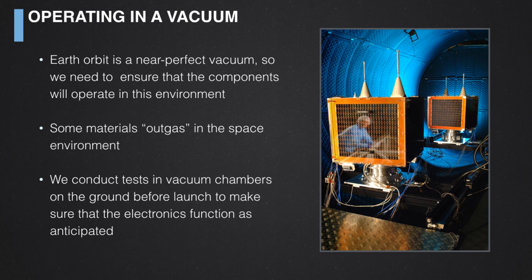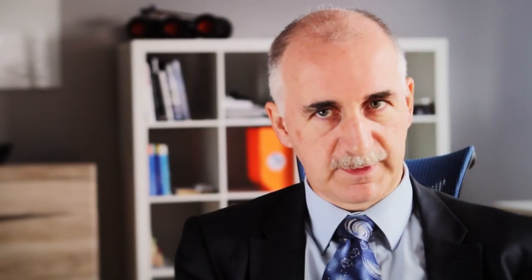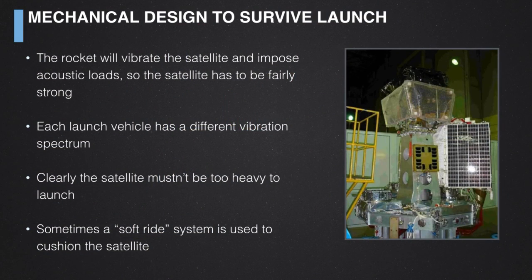The satellite will arrive in space and you need to be sure it will operate successfully in a vacuum. We take a lot of components from the terrestrial microelectronics world — designed for mobile phones and laptops — and some of their packaging is inappropriate for the space environment. The materials outgas when they get into a vacuum, and it's important to make sure that anything that outgasses doesn't end up coating your optics. So we conduct tests in vacuum chambers on the ground to avoid using inappropriate materials before launch.